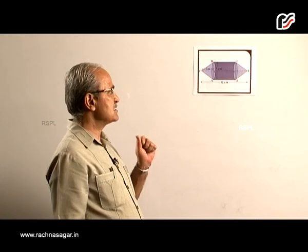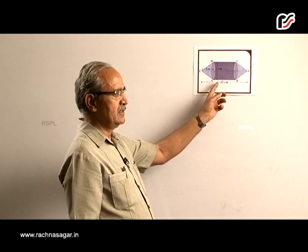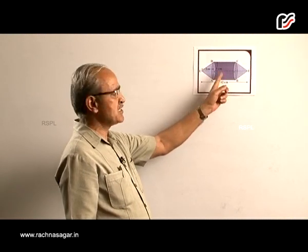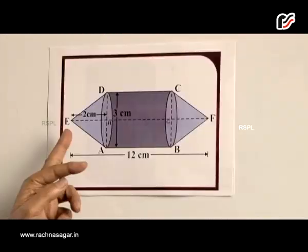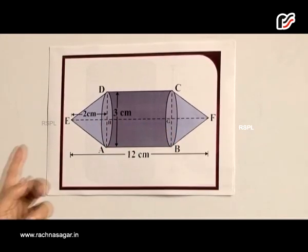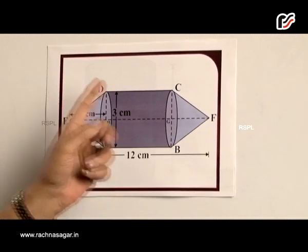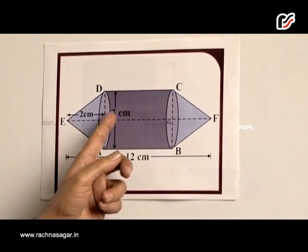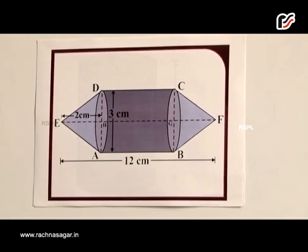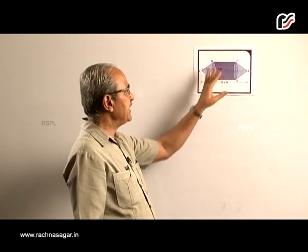Now, in this question we notice Rachel has to make a model shaped like a cylinder with two cones at the two ends. The total length of the model is 12 cm. Diameter of the cylindrical portion is 3 cm and height of each cone is 2 cm. So we have to find out the volume of air contained in the model.